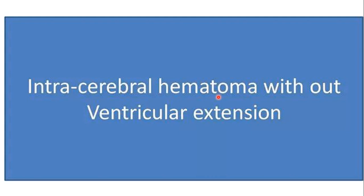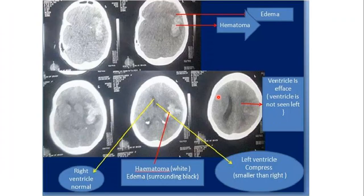Let's see examples of intracerebral hematoma without ventricular extension and with ventricular extension. Without ventricular extension, the hematoma is completely surrounded by brain parenchyma, does not reach the brain surface, and the overlying subarachnoid space is normal. The ventricles have no blood in them, indicating no intraventricular extension, and the cerebral sulci do not have increased density, indicating no subarachnoid hemorrhage.